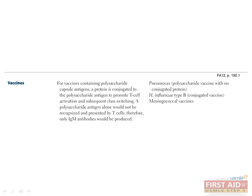Remember from immunology that T cells recognize protein antigens and then display those to B cells to activate class switching and antibody production. This concept is used when designing vaccines, taking a small protein subunit from a bacterium and using it to activate the immune system.